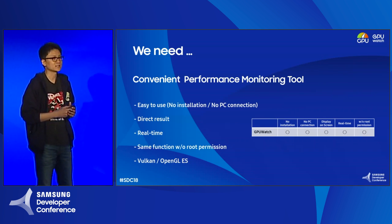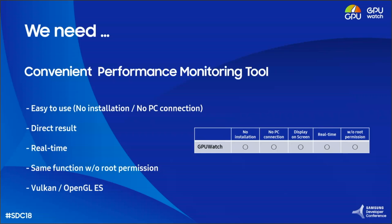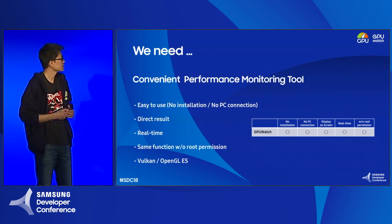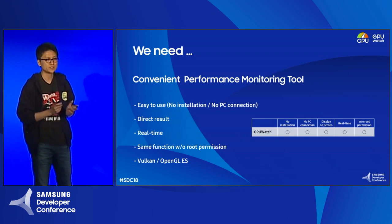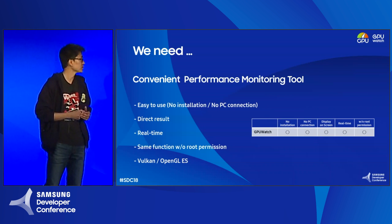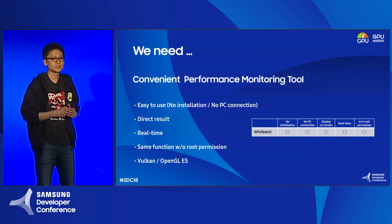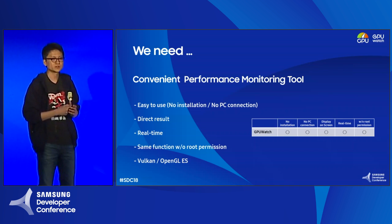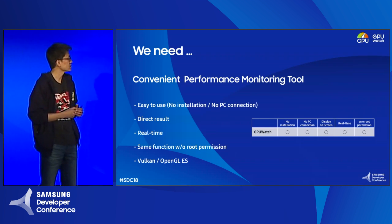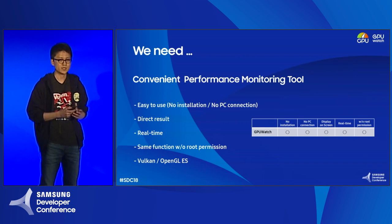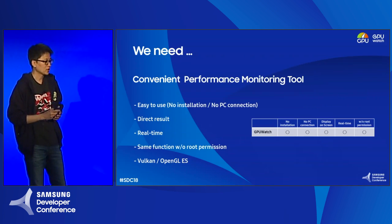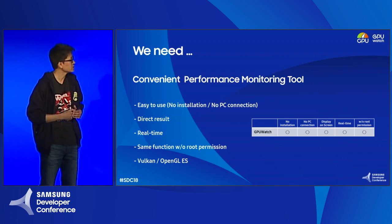We realized we need a new tool — more convenient and simple, so developers can use it easily anytime. It should be easy to use, requiring no installation or PC connection. It shows performance results directly on screen in real time, supports the same functionality without root permission, and supports both Vulkan and OpenGL ES with the same functionality. So we made our own tool named GPU Archie.